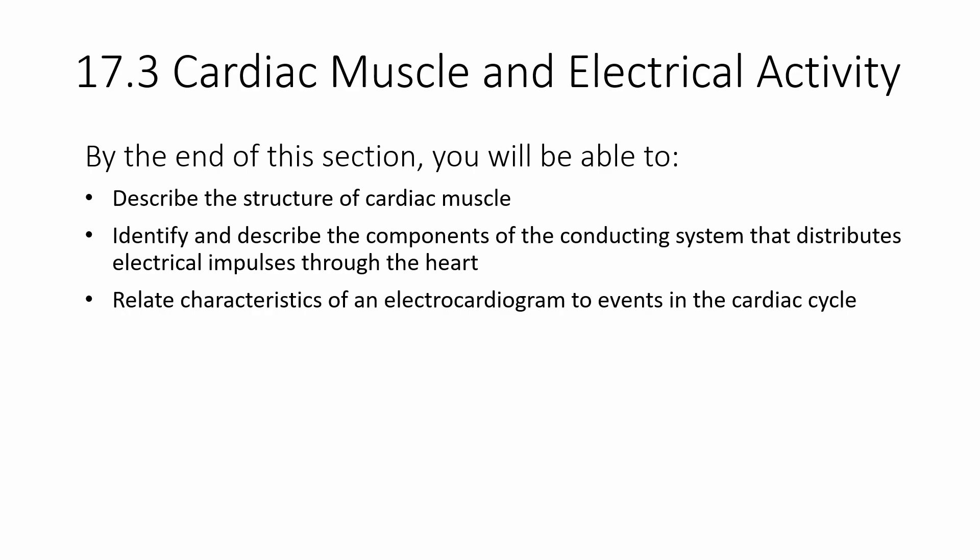This will be our last video for chapter 17, covering cardiac muscle, electrical activity, circulation, and development of the heart. We'll start with cardiac muscle and electrical activity, looking at the structure of cardiac muscle as a review from histology. We'll also look at the components of the conducting system that helps the heart contract by sending electrical signals, and then discuss characteristics of a normal ECG or electrocardiogram as it relates to the cardiac cycle.